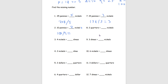Over here, we have 2 quarters equal to blank nickels. We know 2 quarters are 25 cents each, so 25 plus 25 equals 50. We know nickels are 5 cents, so we divide 50 by 5 and get 10. So 2 quarters are equal to 10 nickels.